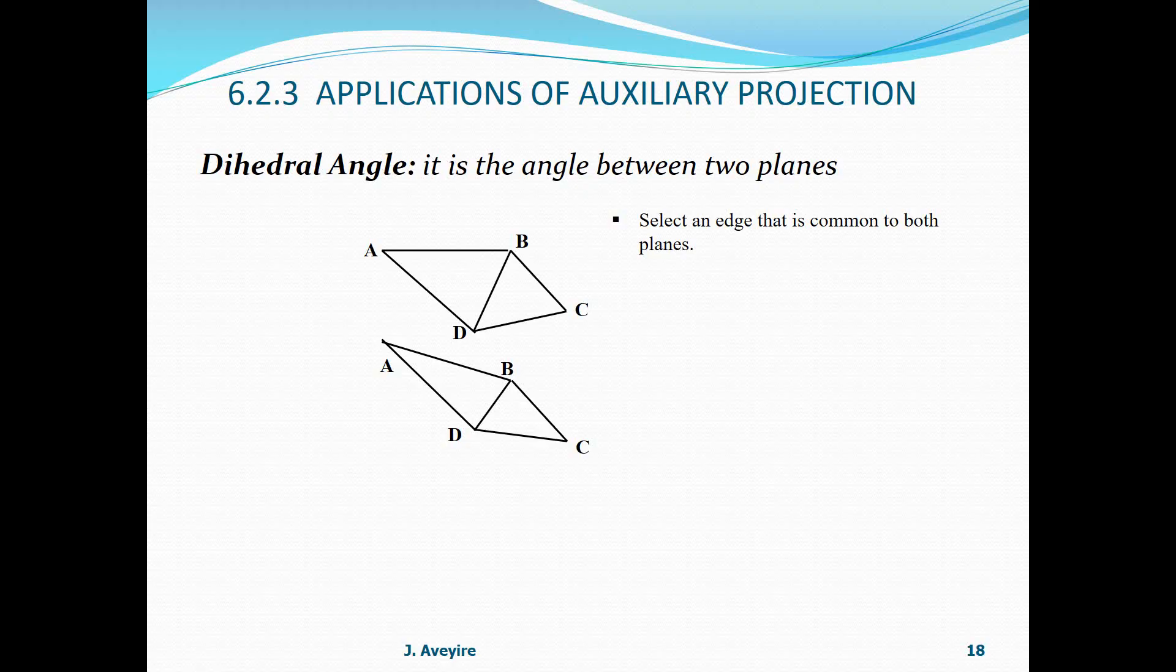To obtain the dihedral angle, we need to select an edge that is common to both. Here the edge common to both is BD. The edge view of BD is a common edge to the two planes ABD and BCD.